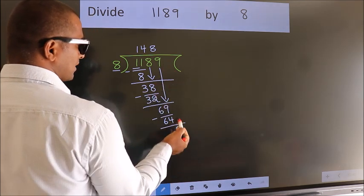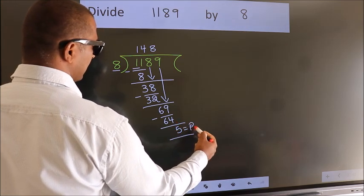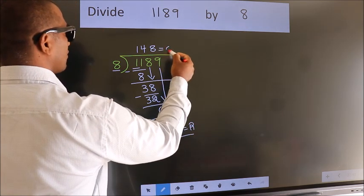No more numbers to bring down. So, we stop here. This is our remainder. This is our quotient.